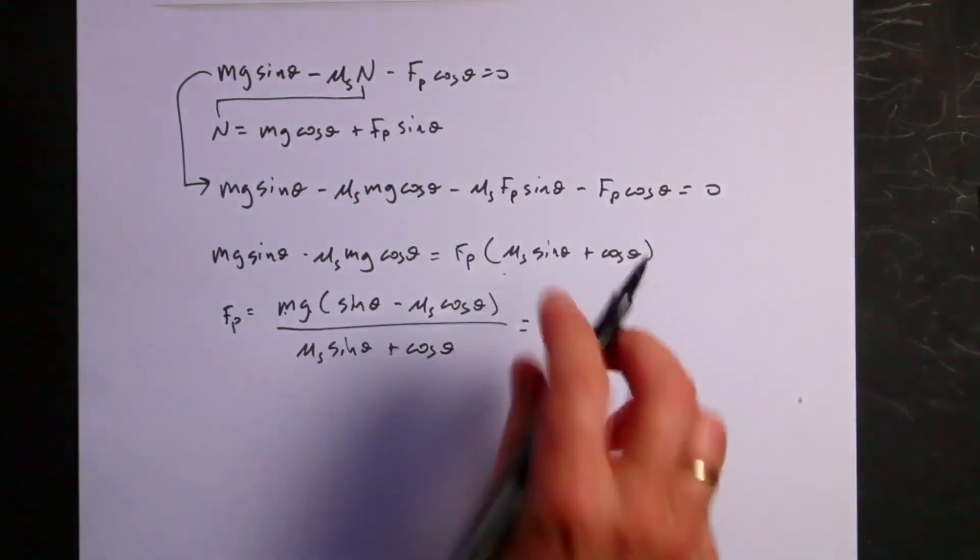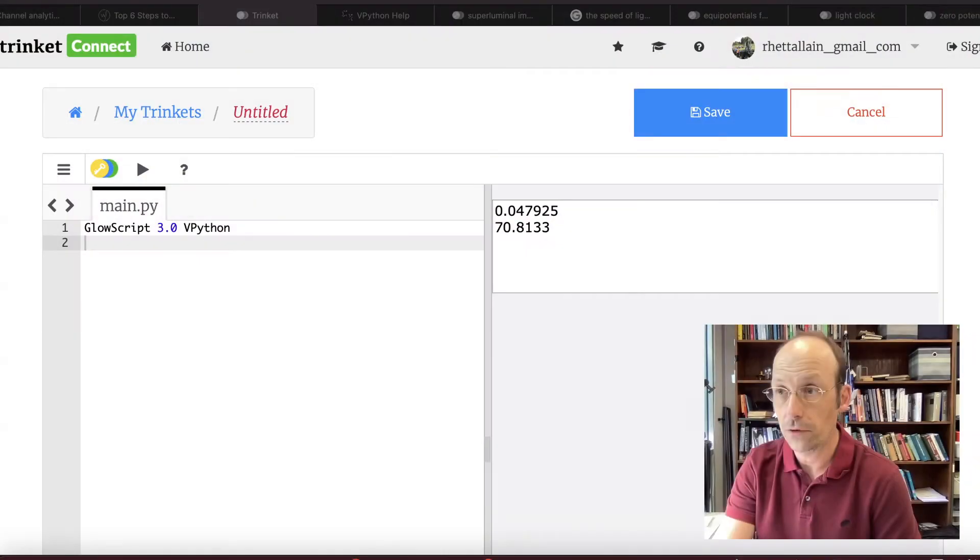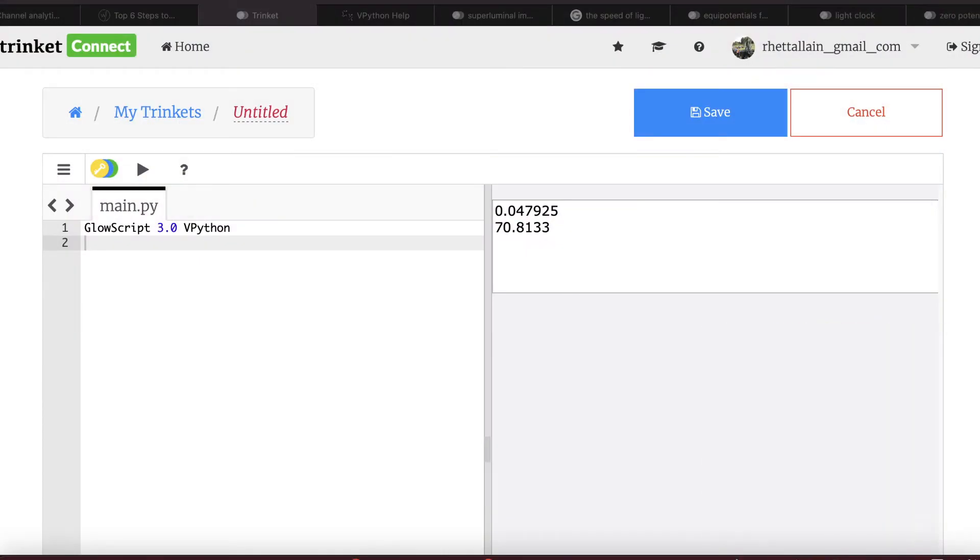Let me go ahead and type in mass equals 0.222, mu s equals 0.14, g equals 9.8. Now I'm not using the gravitational field vector g, I'm just using the magnitude, I've already taken that into account. Theta is 33, but Python likes angles in radians, so I'm going to convert this to radians by multiplying by pi divide by 180.